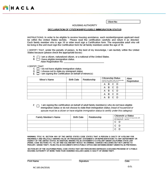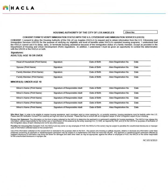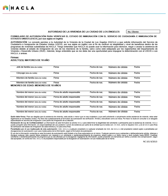Next, we have the Declaration of Citizenship or Eligible Immigration Status. All adults in the household must complete this form, print their name, and sign and date at the bottom. The same form is available in Spanish. Next, we have our consent form to verify immigration status with the U.S. Citizenship and Immigration Services. All adult household members must complete this form; any minors should be listed as well. The same form is also available in Spanish.